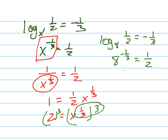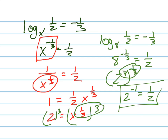Let's do this in an easier way. Let's turn eight into a base two. Eight is just two cubed, and two cubed to the negative one-third — what's three times negative one-third? Negative one. And is two to the negative one the same as one-half? Yes, it is. So eight is my answer. X equals eight.